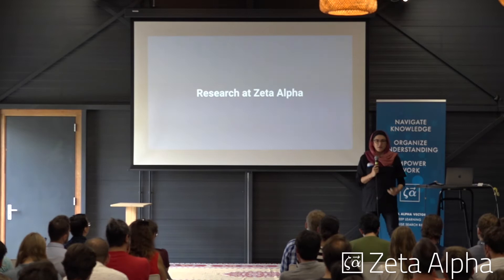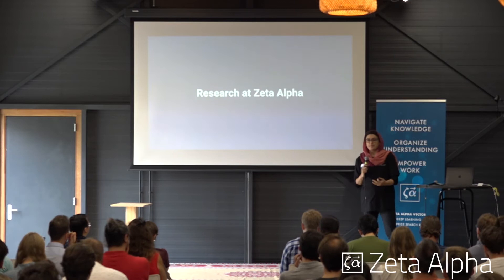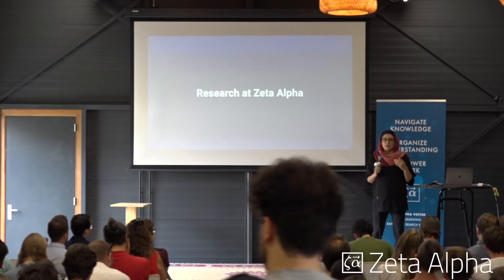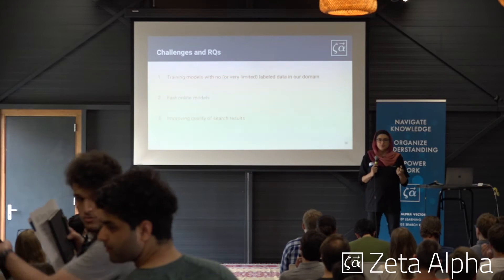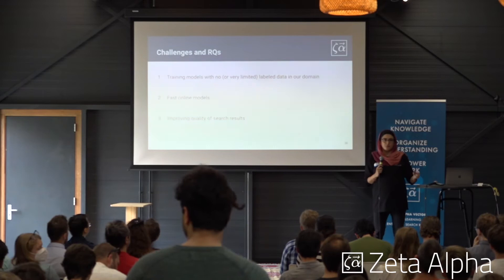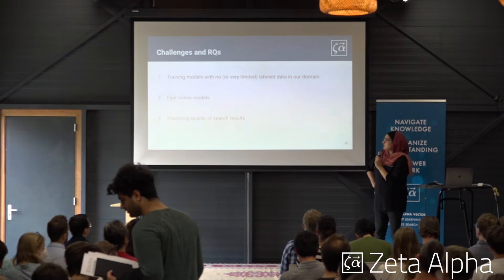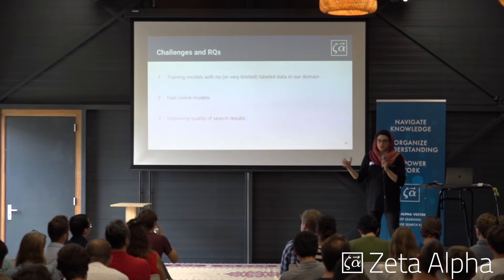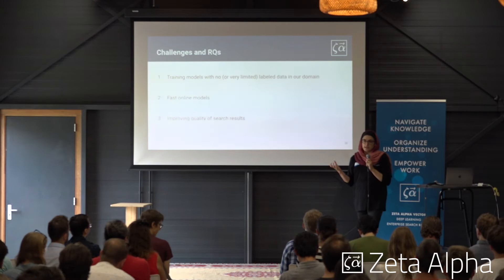So now I've told you about the work in production that we have at Z-Alpha in our platform and why we are doing that. Now I want to get into the ongoing research we've been doing. There are a couple of challenges we are working on in this area. Briefly, I can summarize them in three points: training models with no or very limited data — working in a particular domain like AI and machine learning means there are very limited datasets available, so training models is difficult.